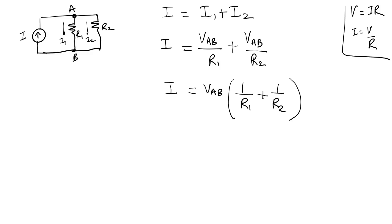Now we want to find out, so let me write down VAB is equal to 1 over 1/R1 plus 1 over R2 times I. So all I'm doing is rearranging these terms. I equals V times something in this parentheses, so V is equal to I divided by that something. So that's all I've done. So let's keep this in mind.